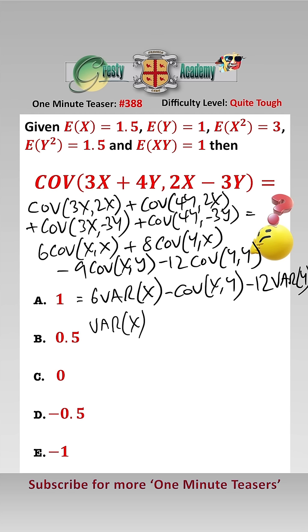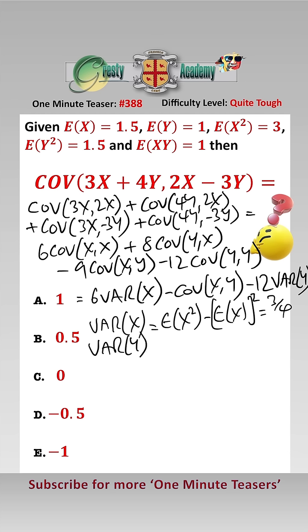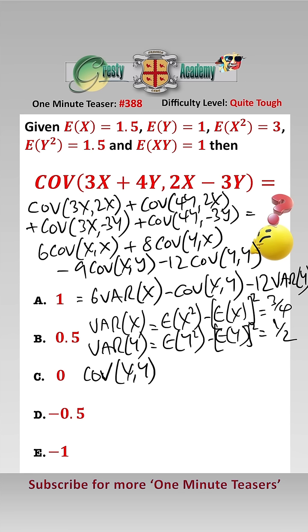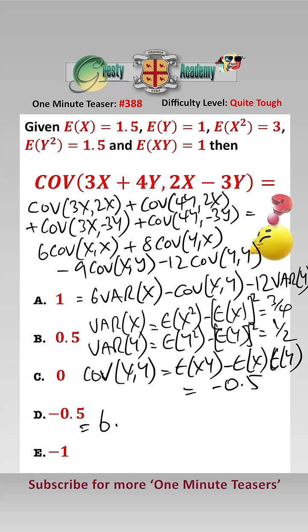So Var(x) equals E(x²) minus E(x)², and from the numbers at the top that gives us 3/4. Var(y) using the same formula, E(y²) minus E(y)², gives us 1/2. And finally, covariance of x and y equals E(xy) minus E(x)·E(y), and that equals minus 1/2. Putting all of that in: 6 times 3/4, add 8 times minus 1/2, minus 12 times 1/2, which equals minus 1 — answer e.